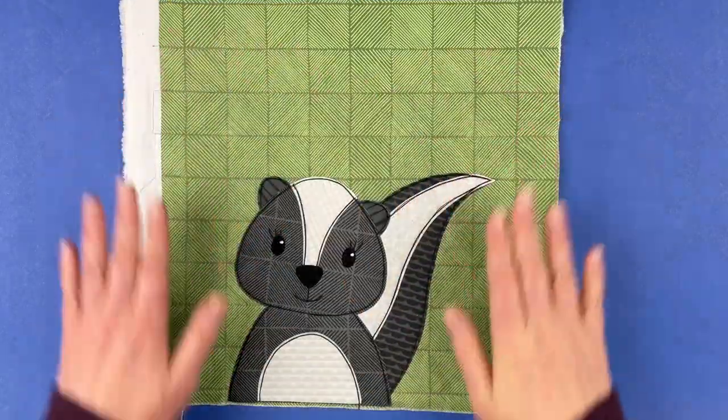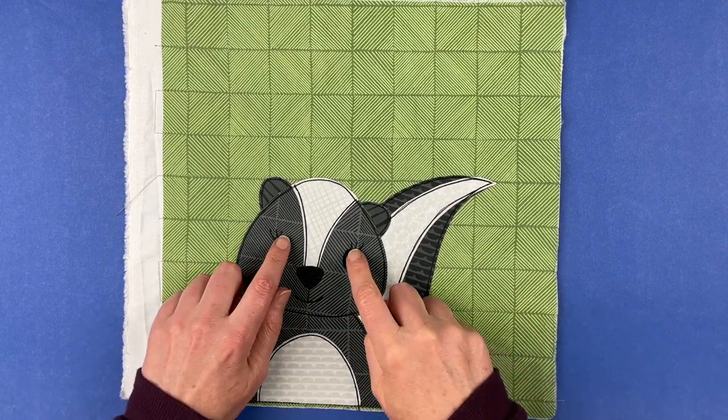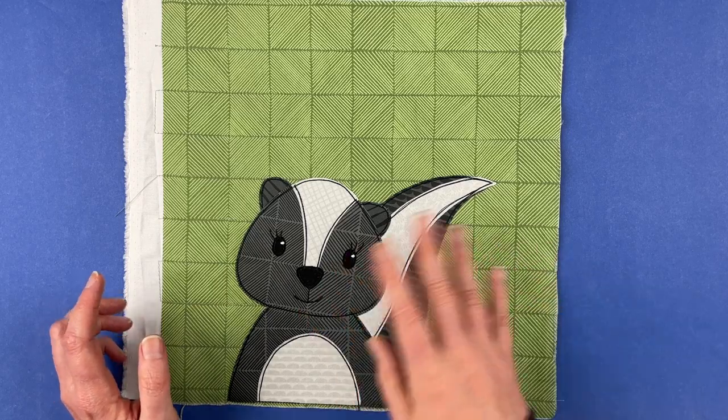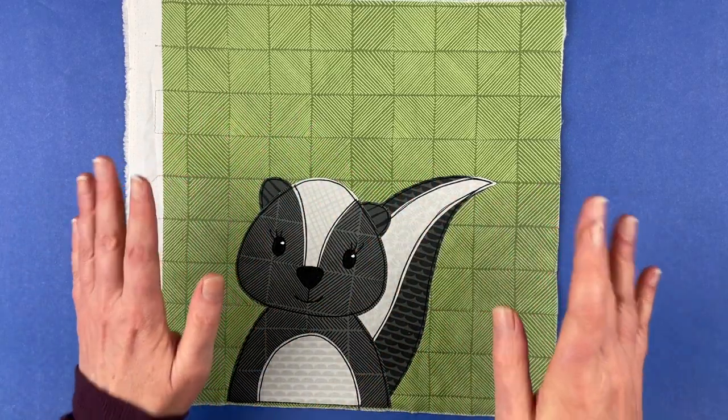Here's the finished skunk. All of the outline stitching is done. And I've added some catch lights to her eyes, just a little dot of white fabric paint. And there's a link in the pattern to a video showing you how to do that.